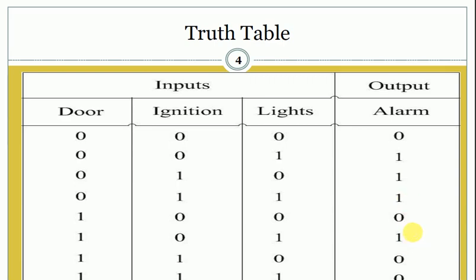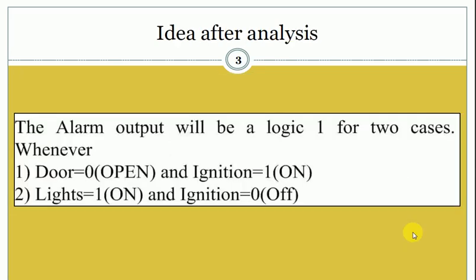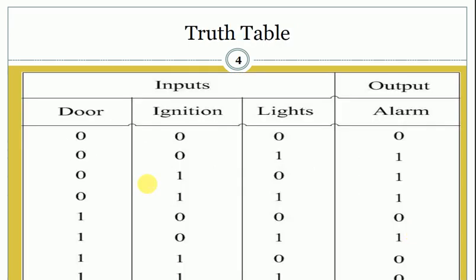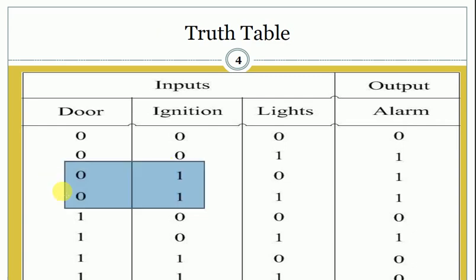How do we get the values? We see that when the door is equal to zero and the value of ignition is equal to one, the alarm should be one. So for door equal to zero and ignition equal to one, we will get the output one for those two combinations.